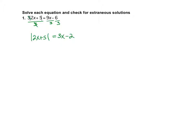So now we split up this equation into 2x plus 5 equals 3x minus 2, or 2x plus 5. And we split it up when we had a number here to the opposite — we write it by writing that negative sign in front of the term. So now I'm just going to solve those two equations.